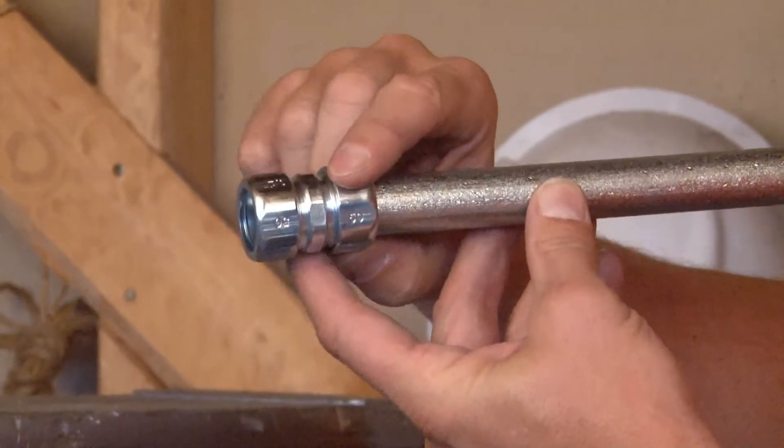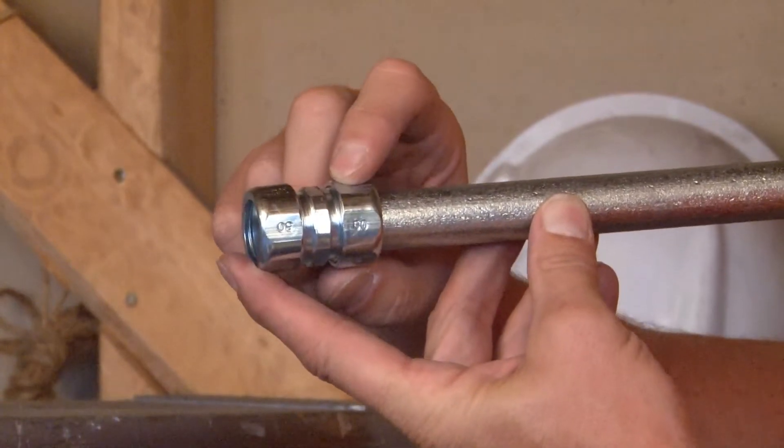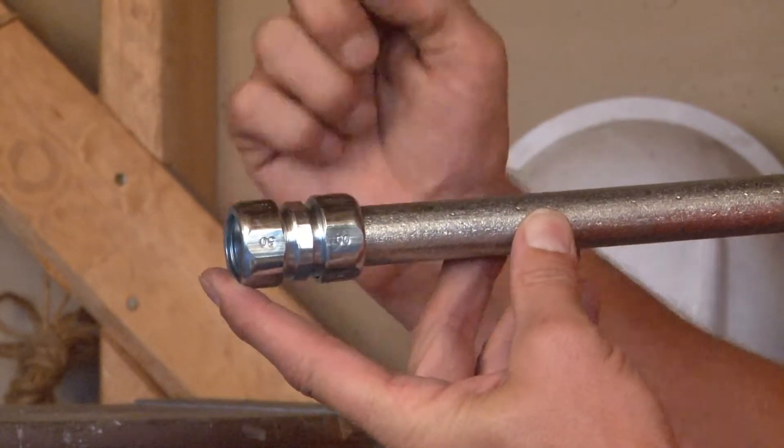You now can tighten on the gland ring using a pair of pliers or channel locks until it bites on the pipe.